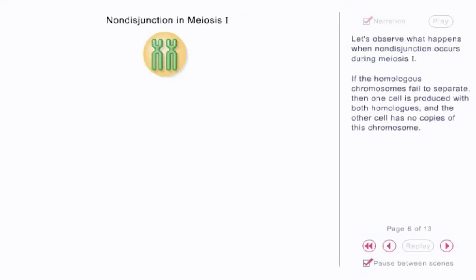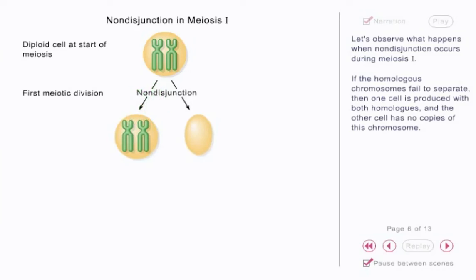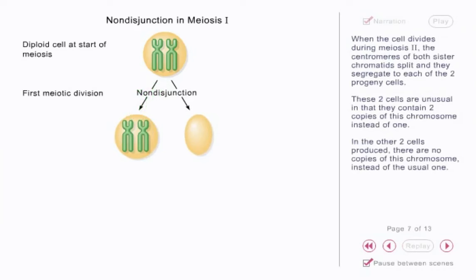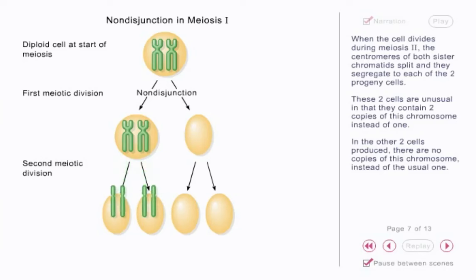Let's observe what happens when non-disjunction occurs during meiosis I. If the homologous chromosomes fail to separate, then one cell is produced with both homologs and the other cell has no copies of this chromosome. When the cell divides during meiosis II, the centromeres of both sister chromatids split and they segregate to each of the two progeny cells. These two cells are unusual in that they contain two copies of this chromosome instead of one. In the other two cells produced, there are no copies of this chromosome instead of the usual one.